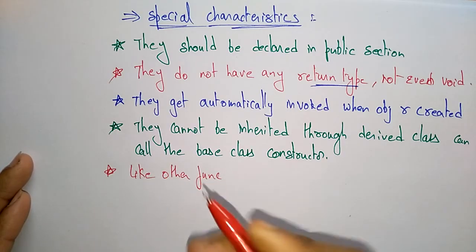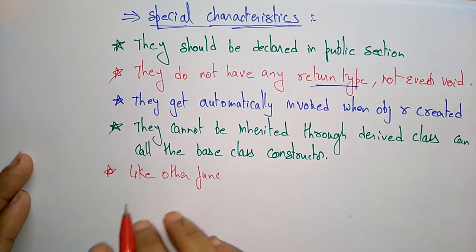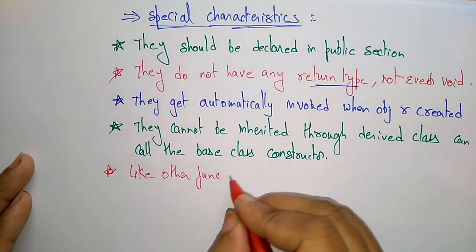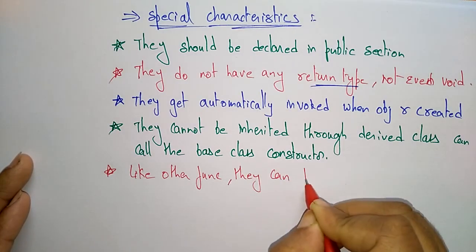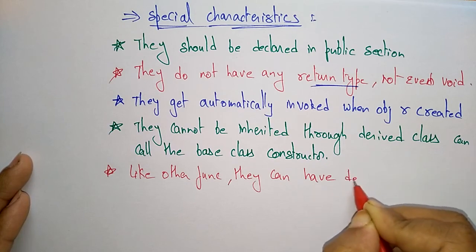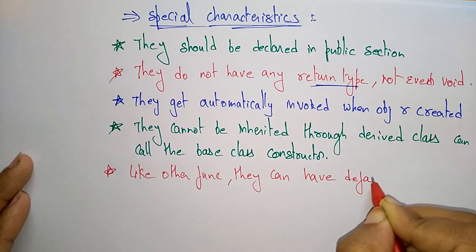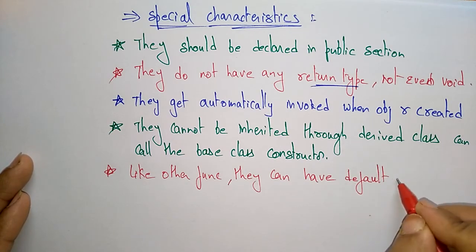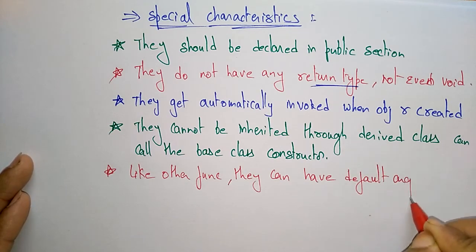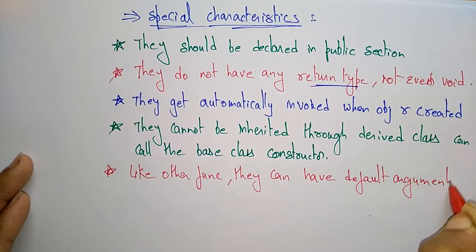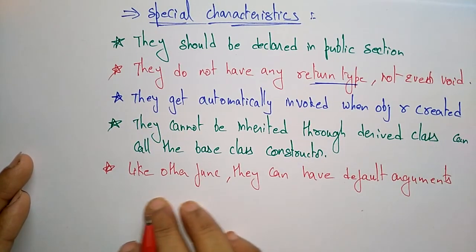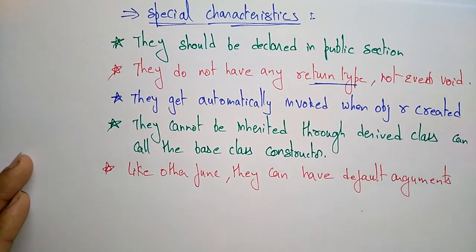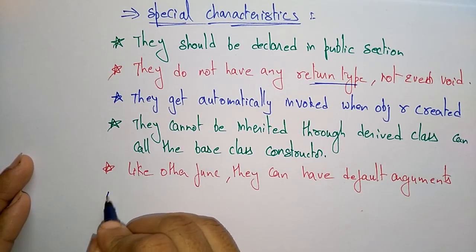Like other functions, constructors can have default arguments. The compiler will take the default arguments just like other functions. Additionally, the constructor cannot be virtual.